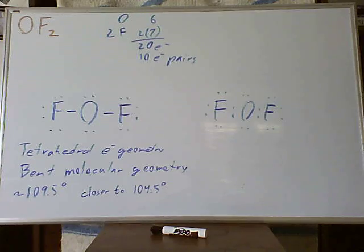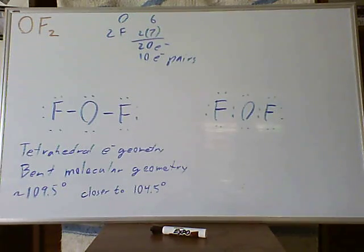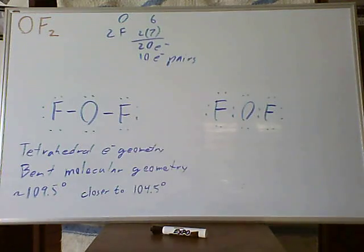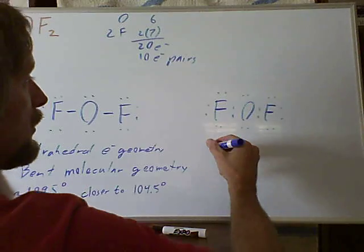the lone pairs on the central atom, whenever we see lone pairs on the central atom, we know the polar bonds cannot cancel out, so that will leave a polar molecule. So we have a polar molecule.